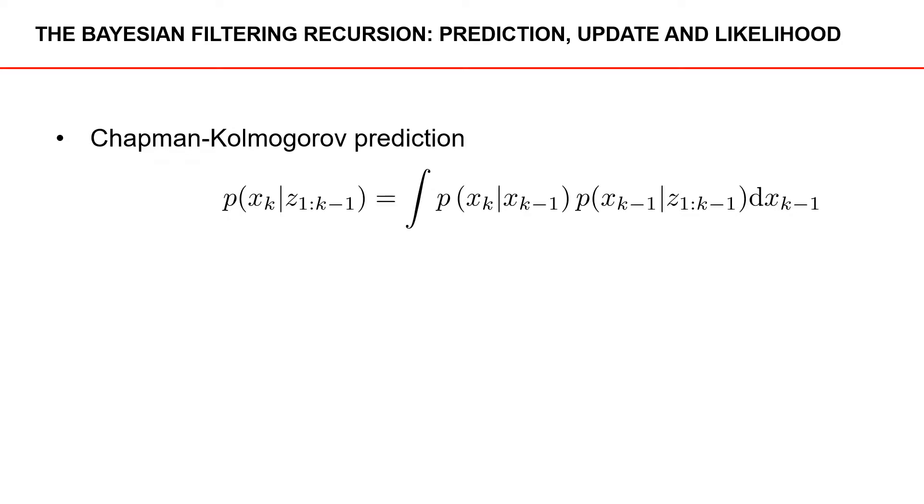Here, we take the density at time k-1, given measurements up to and including time k-1, and we also take the transition density, and then we marginalize the previous state. In other words, we marginalize the state at time k-1. What this does is that it gives us the predicted state density.